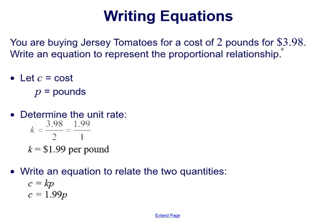Well, using the $3.98 and the two pounds, that's our p value and our c value, which we can also think of as an x value and a y value. So if k is equal, remember, to y over x, to find the unit rate we can do y over x or that ratio.